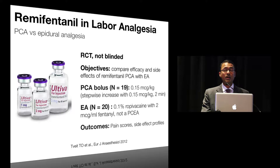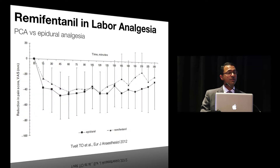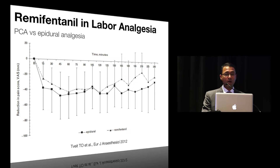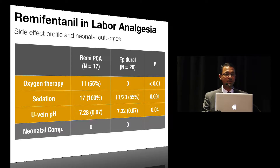This was not a PCEA study — it was a continuous infusion with midwife-administered top-ups. The primary outcome was pain scores and side effect profiles between the two groups. When the reduction in pain scores was plotted against time, there was no difference between the epidural analgesia group and the remifentanil PCA group. However, looking at the side effect profile, almost 65% of parturients who received remifentanil PCA required oxygen therapy, almost all had some element of sedation, and the umbilical vein pH was about 7.28, though there were no differences in neonatal outcomes or APGAR scores.